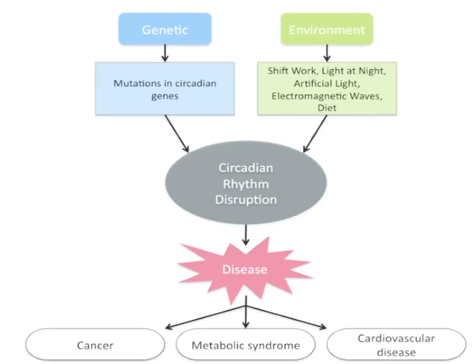Disruption of the circadian rhythm can be genetic — that is, through mutation in the circadian genes such as the period gene. It can also be environmental, including shift work, light at night, artificial light, electromagnetic waves, and diet, all of which disrupt circadian rhythm.